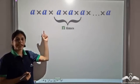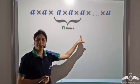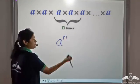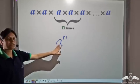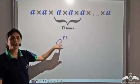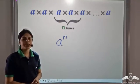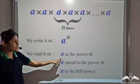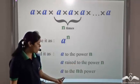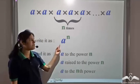So in general, any number a multiplied n times can be written as a to the power n. Here a is the base and n is the exponent. So a to the power n denotes a being multiplied n times, and we read it as a to the power n, a raised to the power n, or a to the nth power — we can read it in any manner we want.